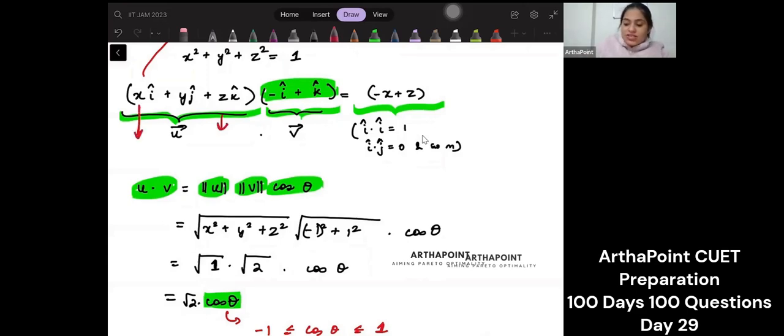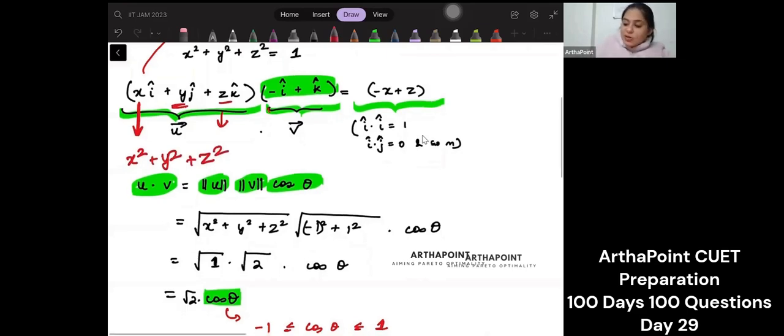So the magnitude of the first vector will be what is coming with this, that is x square. What is coming with this plus y square. What is coming with this plus z square. Magnitude of this vector is its coefficient minus one square plus its coefficient one square. That is its magnitude.